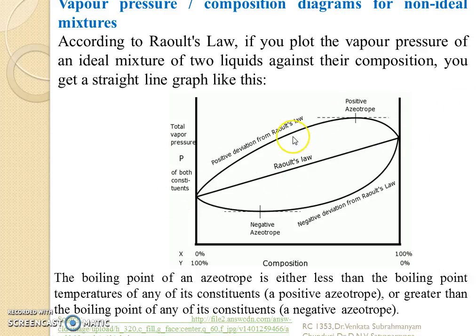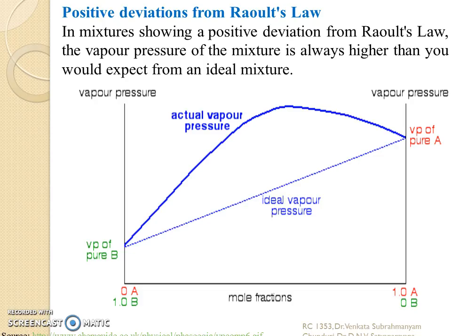If the liquid mixture shows higher vapor pressure than expected, then we call it a positive azeotrope. If it is showing less vapor pressure, then we call it a negative azeotrope. Let us take two components A and B. At a particular mole fraction, it has to show a certain vapor pressure, but it is showing vapor pressure more than this. This type of higher vapor pressure showing mixtures are called positive deviation azeotropes.